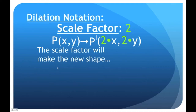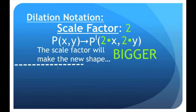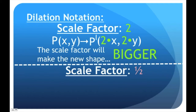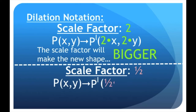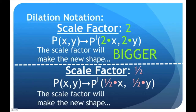The scale factor will make the new shape bigger. What if we have a scale factor of one half? That is less than one. Our point P at coordinates x, y will become P prime at coordinates one half times x and one half times y. All we're doing is multiplying our x coordinate and our y coordinate by our scale factor. And the scale factor will make the new shape smaller.